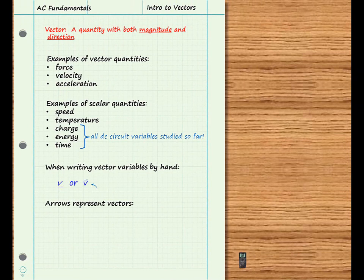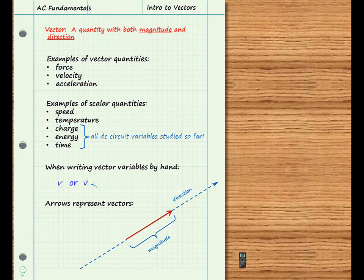It's convenient to represent vector quantities using arrows. When we do so, the length of the arrow represents the magnitude of the quantity, and the direction is indicated by the arrow's orientation with respect to some reference point.